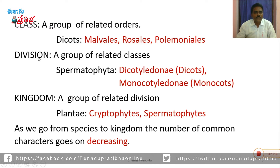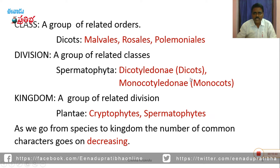Next, division: a group of related classes. Dicots and monocots are grouped under the division Spermatophyta. Dicots have two cotyledons, monocots have a single cotyledon in their seeds. Both dicots and monocots together form the division Spermatophyta.